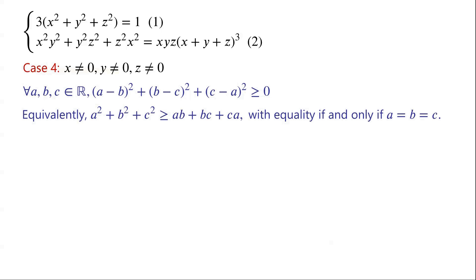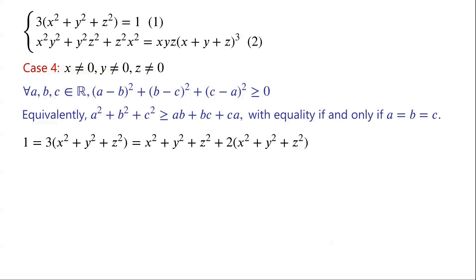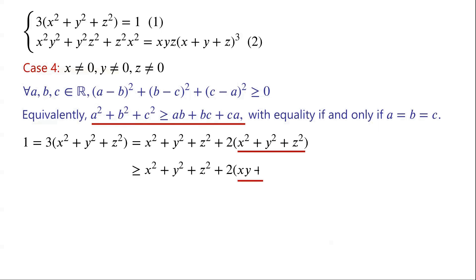From equation one, we have 1 equals 3 times (x² + y² + z²), which can be written as (x² + y² + z²) + 2(x² + y² + z²). By applying this inequality, we know that x² + y² + z² is greater than or equal to xy + yz + zx, which is just equal to (x + y + z)².